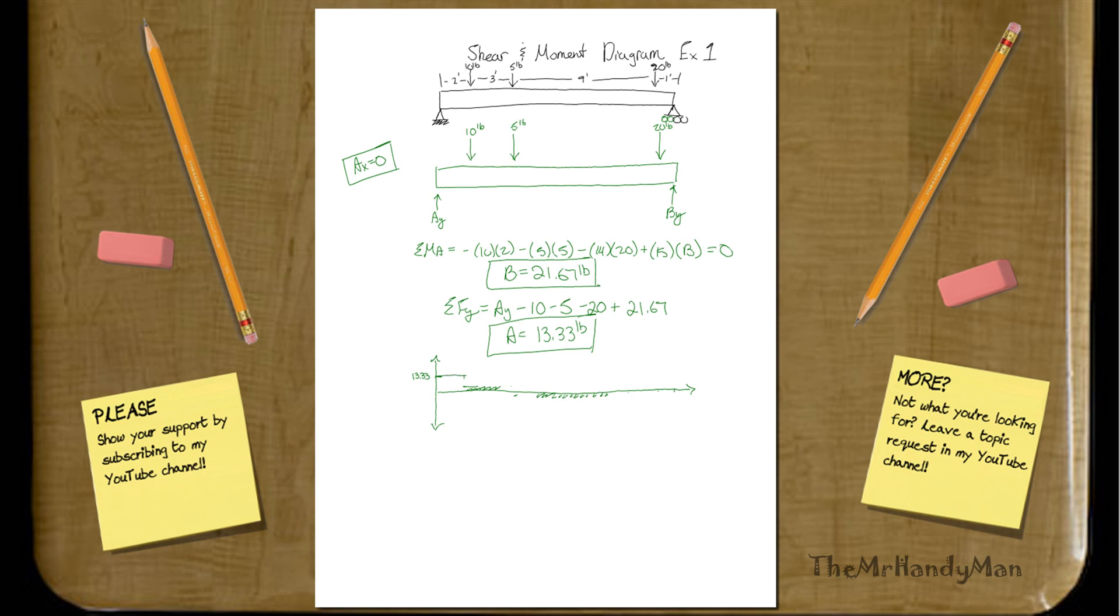Then it goes down 10. So, now it's down to 3.33 feet. Then it goes for 3 more feet to the side, till here, at which point it goes down 5. So, it actually goes down into the negative. So, let me write this out. This right here, this height, is going to be 3.33. And this is going to be negative 1.67 pounds.